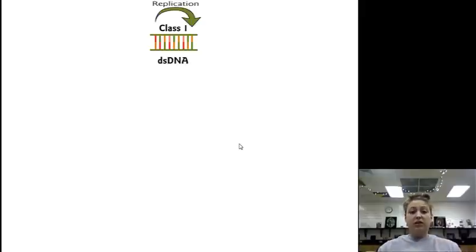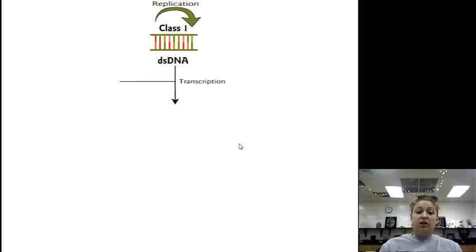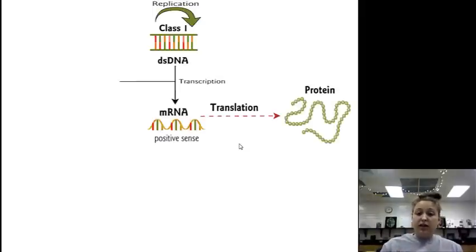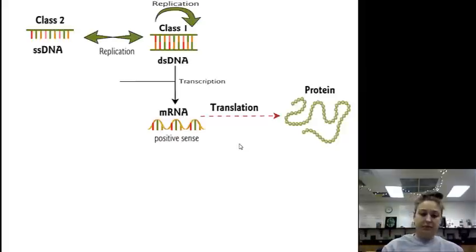Class 1 genomes are going to be double-stranded DNA — normal DNA, double-stranded. During replication, DNA replication is done with DNA polymerase. Normal stuff. Transcription occurs and then we've got our mRNA, and then we've got our translation into proteins. Normal stuff.